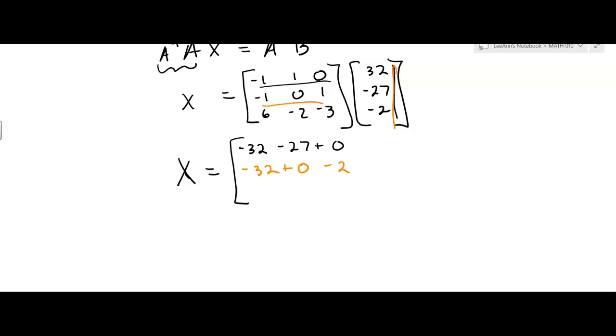And then finally, I'm going to multiply this row by the column, so it's going to be 6 times 32 minus 2 times negative 27 minus 3 times negative 2. Okay, so a little bit of work on that last one.